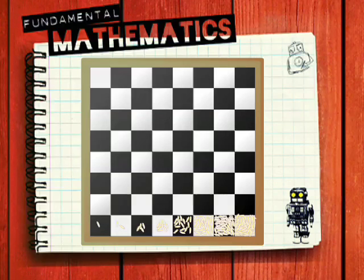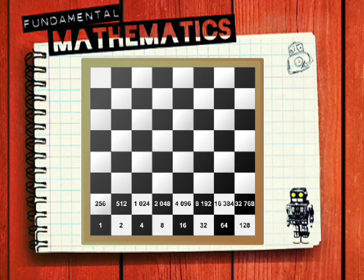Whenever anything grows very fast, we can say that it grows exponentially. Look at a chess board. It has 64 blocks. In the first block, we can write the number 1. Then double this and write the answer in the second block, and continue this pattern all the way to the end.